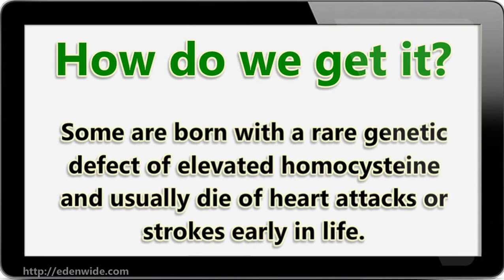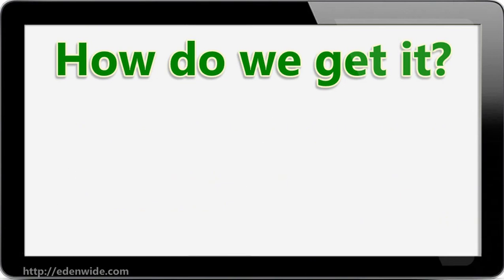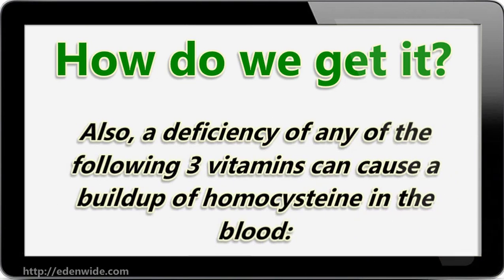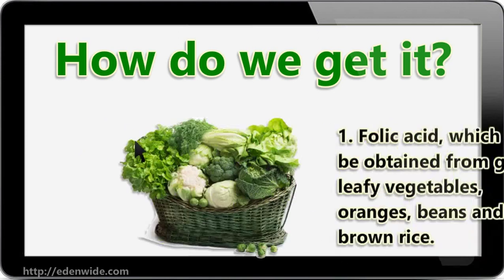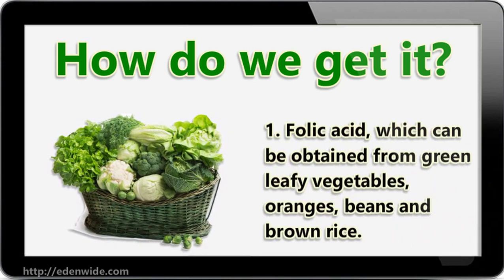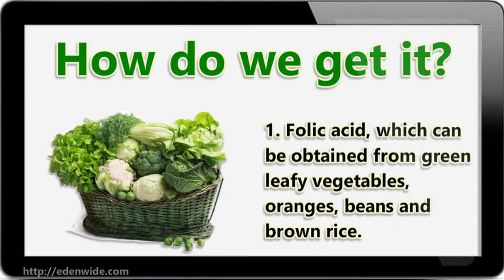How do we get it? Some are born with a rare genetic defect of elevated homocysteine and usually die of heart attacks or strokes early in life. Also, a deficiency of any of three vitamins can cause a buildup of homocysteine in the blood. One: folic acid, which can be obtained from green leafy vegetables, oranges, beans, and brown rice.